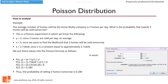The uses of Poisson distribution include finding probability for the number of events in an interval of time or area when events occur at a constant rate, the number of items in a batch of random size, and in reliability testing where the failure rate is considered to be constant as a function of usage.